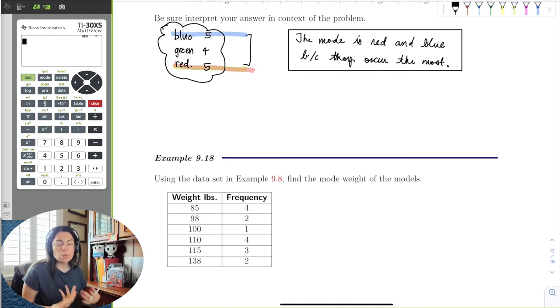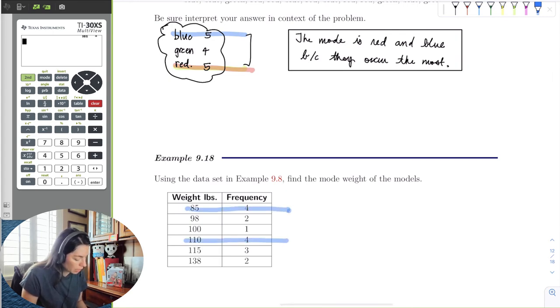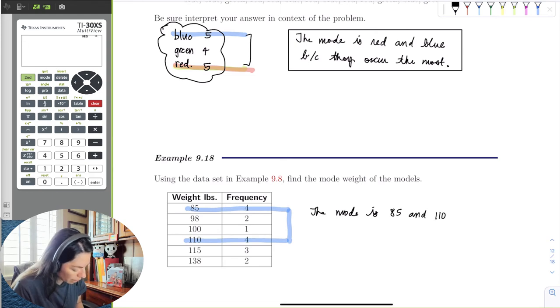We would see here that 85 and 110 are model weights that occur the most. Because they occur the same, we would say that the mode is 85 and 110 pounds.